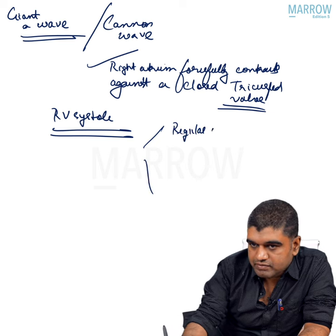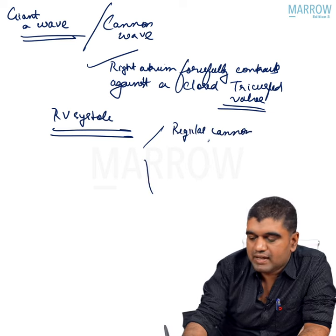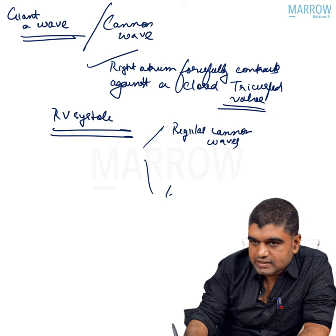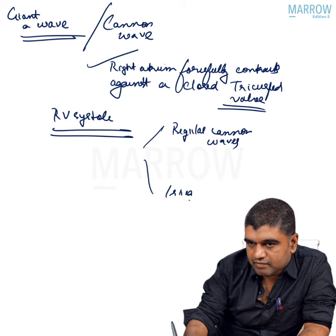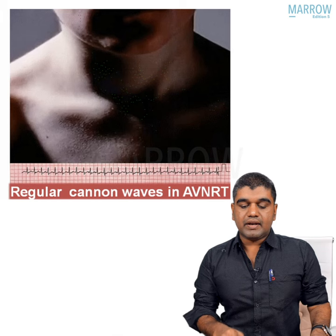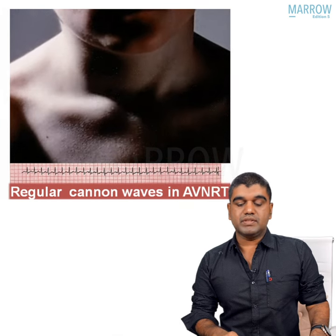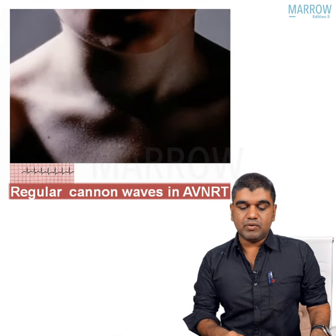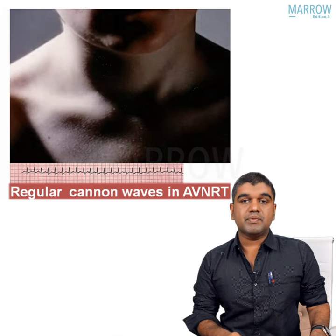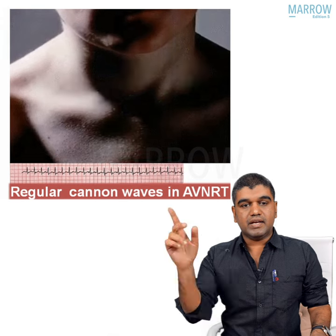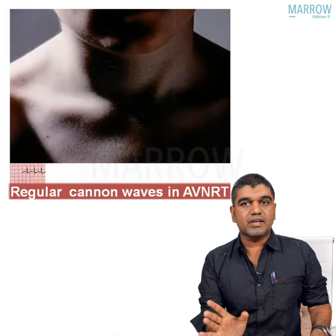The first setting is called regular cannon waves, which is basically an arrhythmia. The second is irregular cannon waves. The regular cannon wave is a typical example seen in AVNRT patients, where you can see the giant A wave — and it is very regular.